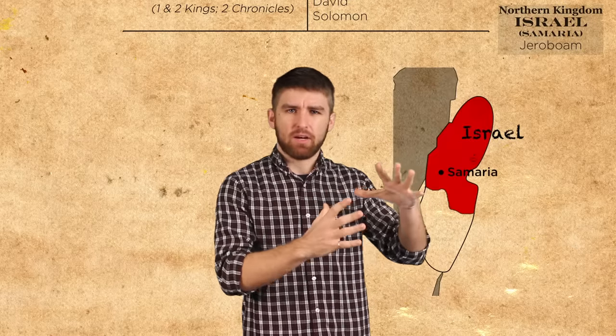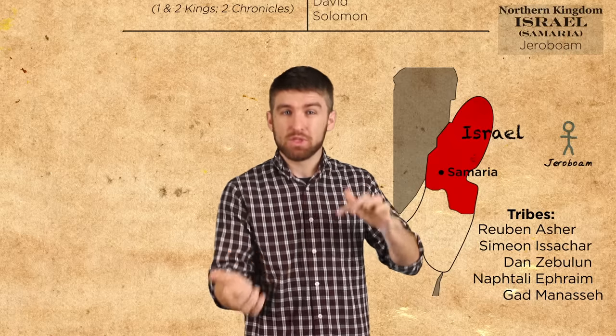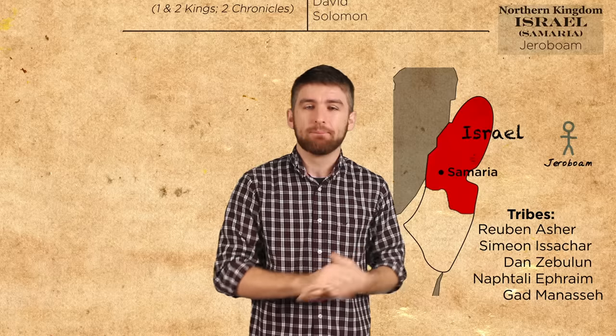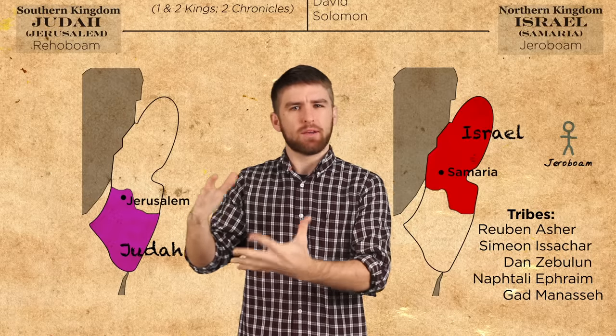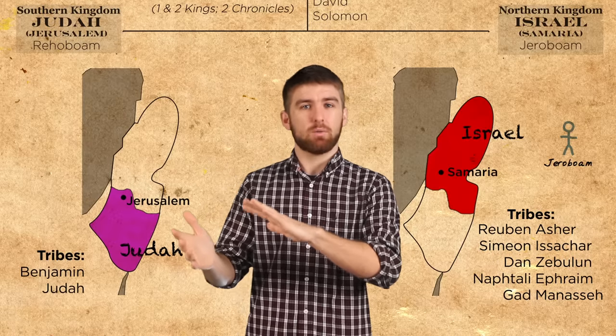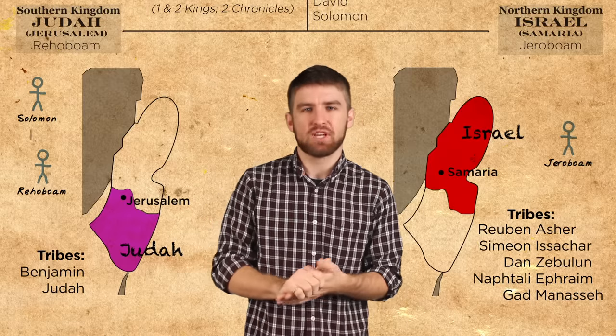When Solomon dies, things get complicated. The kingdom splits in two. For the next few centuries, there's two kingdoms that play a part of the story. There's the northern kingdom, known as Israel, comprised of 10 of the original tribes, which is led by Jeroboam, who was one of Solomon's commanders in the army. Then there's the southern kingdom, known as Judah, comprised of two of the original tribes, which is led by Rehoboam, who was Solomon's son. I told you it was complicated.